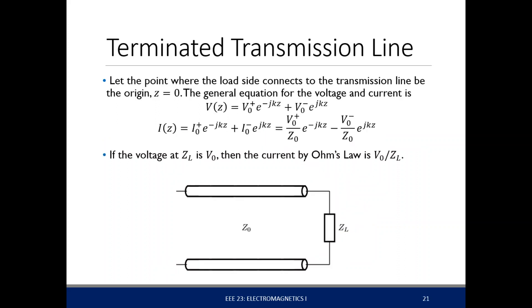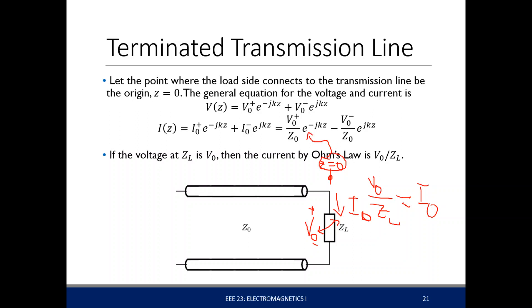So, if we have a load Z sub L, let that be the origin where Z is equal to 0. The voltage at Z sub L is some voltage V sub 0, and the current that flows through Z_L is I sub 0. By Ohm's law, the relationship between V sub 0 and I sub 0 is that V sub 0 over the impedance Z_L is equal to I sub 0. Since Z is equal to 0 here, we substitute it into the general solution of our transmission line function.